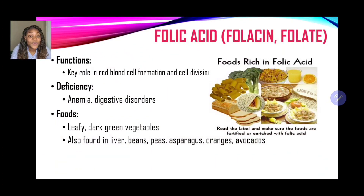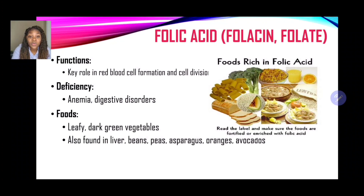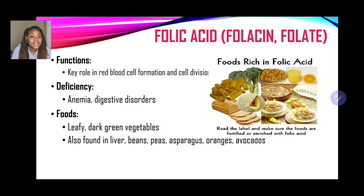Our next B vitamin is folic acid — also known as folacin or folate. Its key role is in red blood cell formation and cell division. You'll notice that most B vitamins have a key role in the formation of red blood cells and also metabolism. A deficiency in folic acid or folate can result in digestive disorders and anemia. Foods rich in folate include dark leafy green vegetables, liver, beans, peas, asparagus, oranges, avocado, cantaloupe, bread, cereals, and okra.